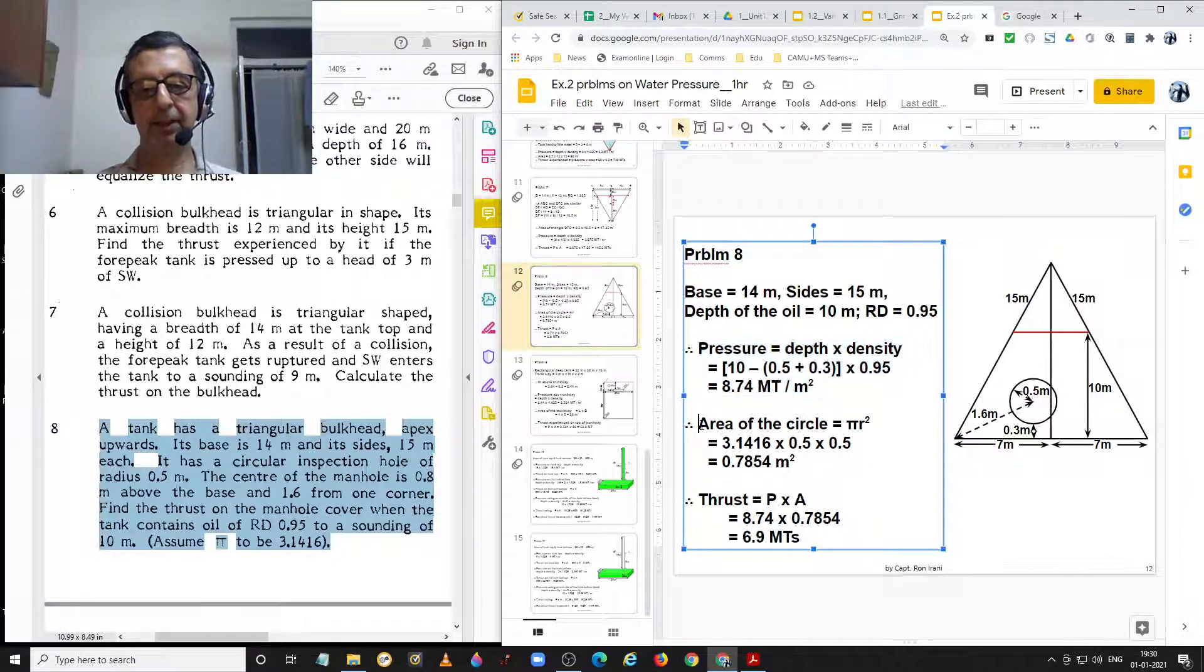Area of the circle is pi r square. Pi is 3.1416 and r is 0.5 which gives us an area of 0.7854 square meters.